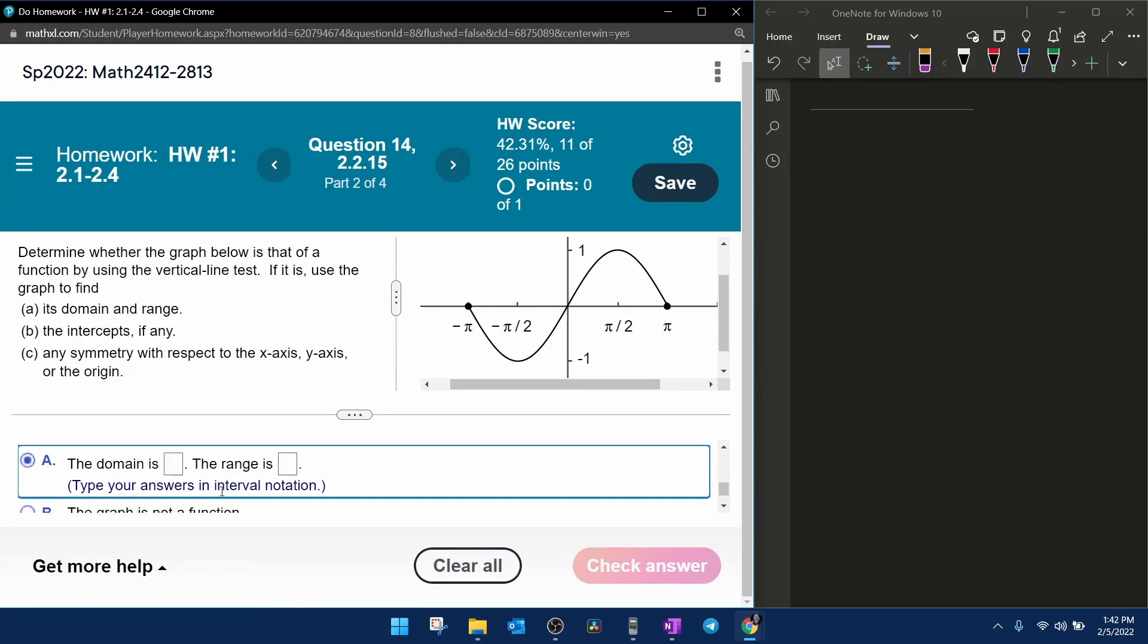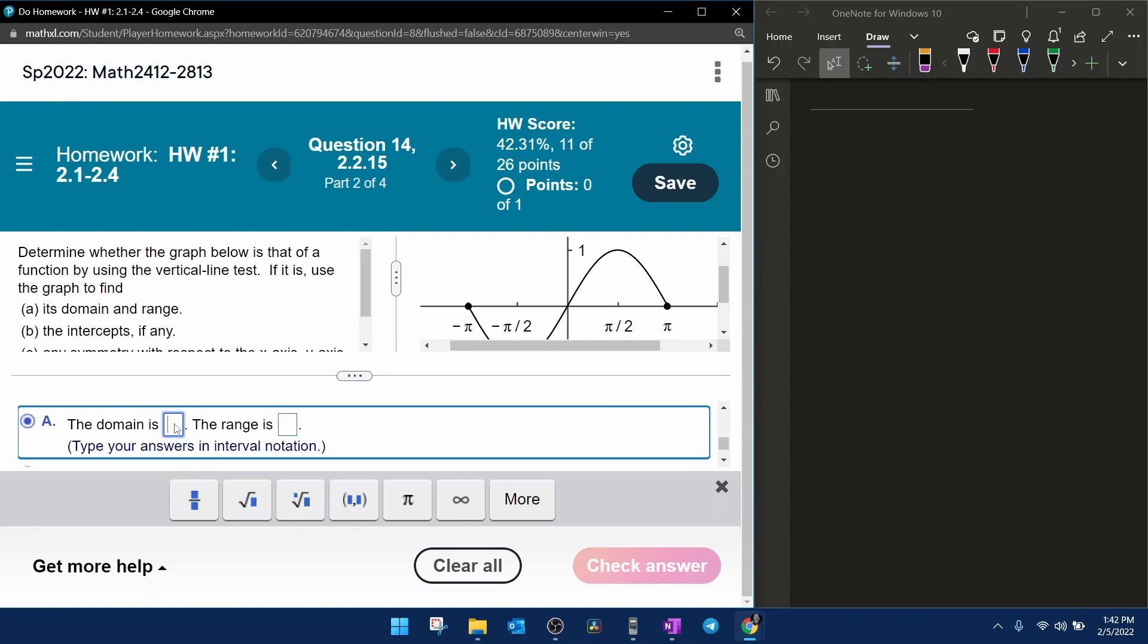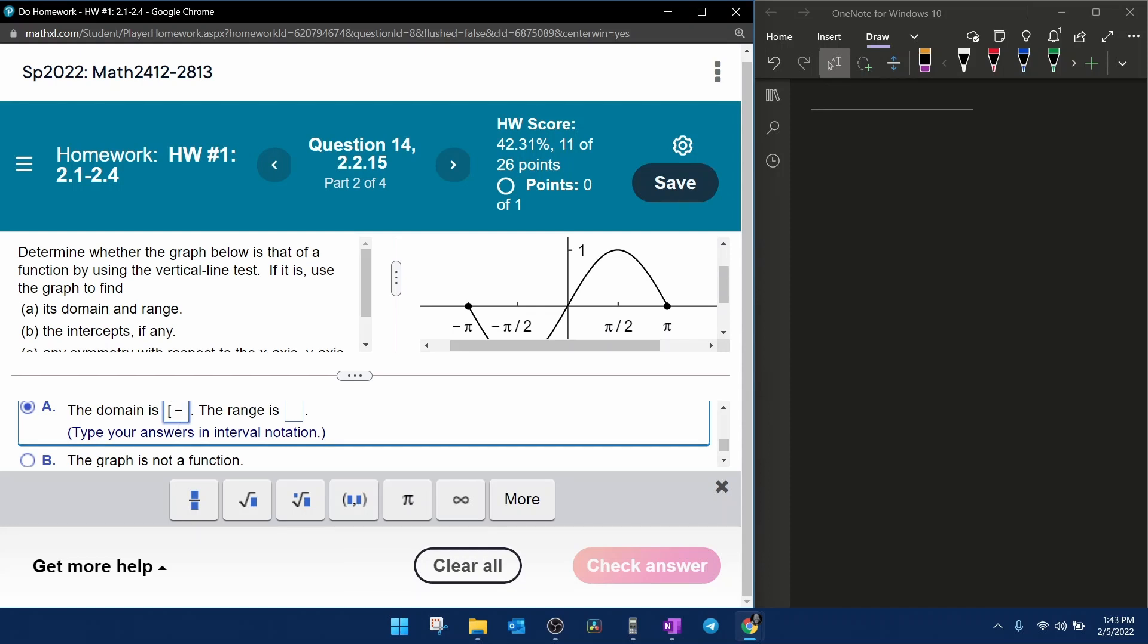and they do want interval notation. Notice that this graph starts at negative pi on the x-axis, and it is continuous all the way over to pi, and that's going to require brackets from the keyboard, negative pi, we do have a pi symbol here in the toolbar, to pi, and do you understand the brackets are required because those are actual points on the graph so that pi is included in the domain?